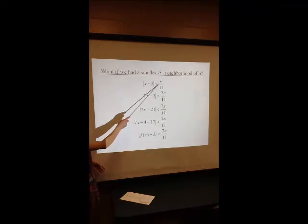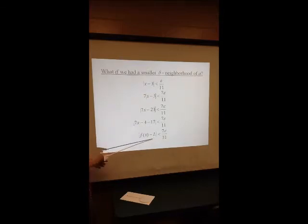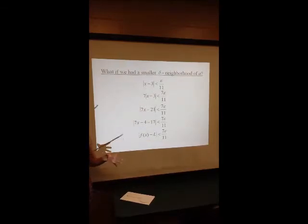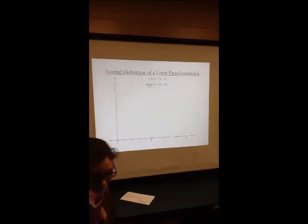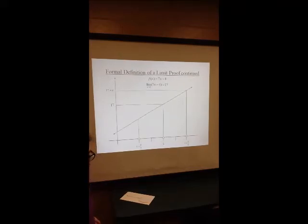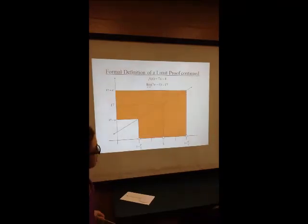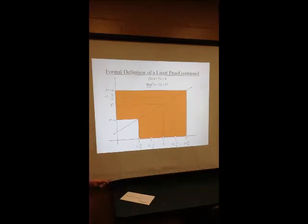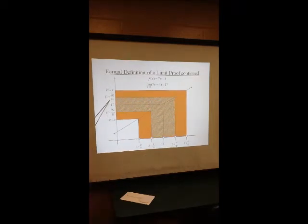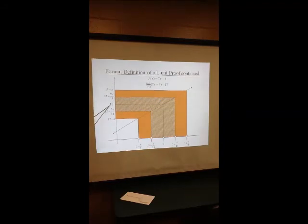So when delta equals epsilon over 11, this delta-neighborhood of 3 maps perfectly into a 7 epsilon over 11 neighborhood of L. Since 7 epsilon over 11 is less than epsilon, this means a smaller delta-neighborhood still fits into our original epsilon-neighborhood of L. On the graph, we can see our original delta-neighborhood where delta equals epsilon over 7, which maps into the epsilon-neighborhood of 17. Our new delta-neighborhood, where delta equals epsilon over 11, maps into a 7 epsilon over 11 neighborhood of 17, which is still smaller than our original epsilon-neighborhood, proving that 17 is the limit of f of x as x approaches 3.